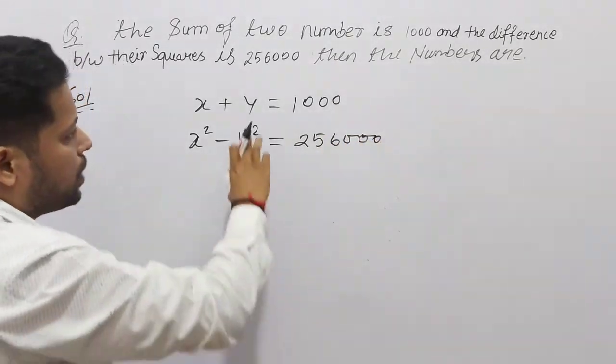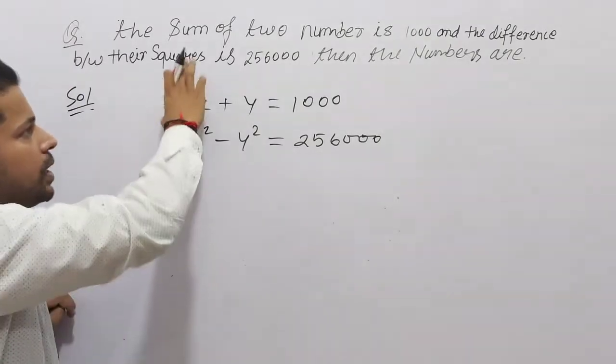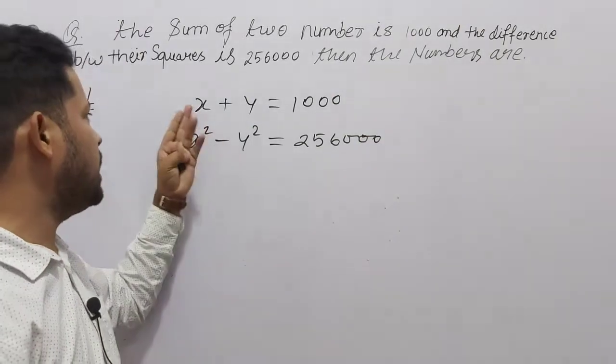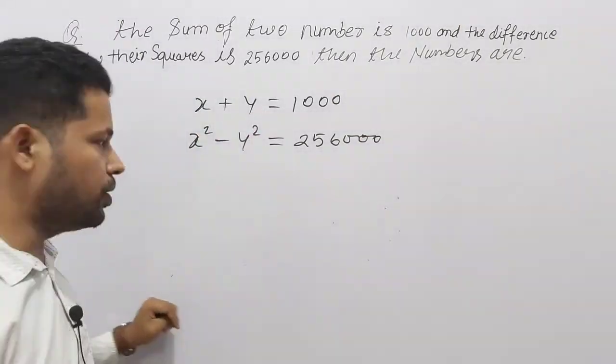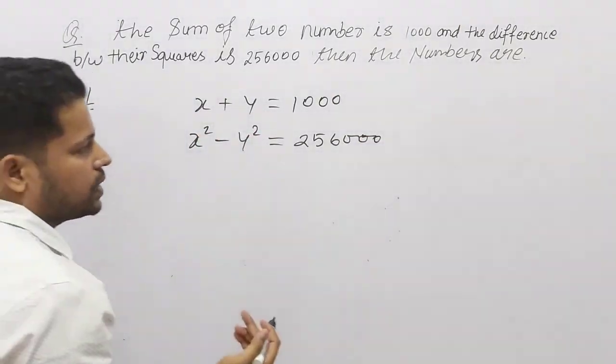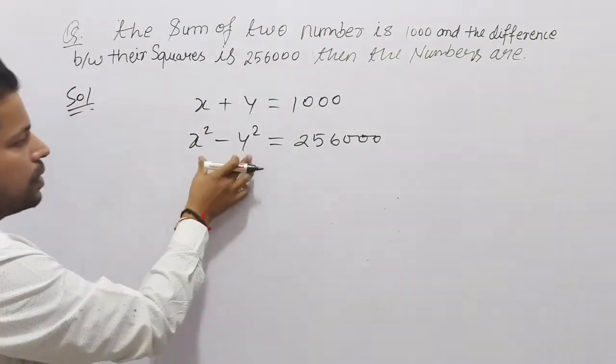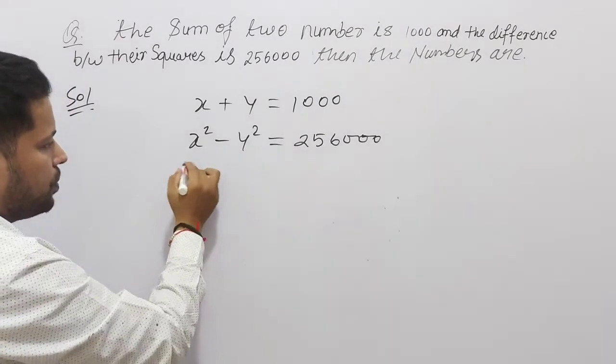Okay? So, ہمارے پاس इतनी informations दی گई हैں, questions में. अब हमें बताने हैं numbers. So, numbers जो हमने let किया है, x and y. Okay? So, अभी हम क्या कर सकते हैं? इसमें देखिए, एक identity apply हो रही है और उसको हम apply करते हैं.